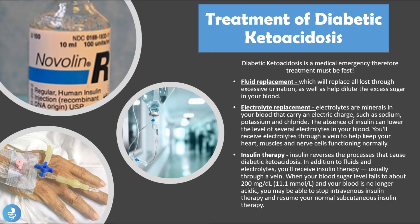Finally, insulin therapy reverses the processes that cause diabetic ketoacidosis. In addition to fluids and electrolytes, insulin is administered through a vein. When blood sugar levels fall to about 200 mg/dL (approximately 11.1 mmol/L) and the blood is no longer acidic, the patient may stop intravenous insulin therapy and resume normal subcutaneous insulin therapy. The three key treatment points are: fluid replacement, electrolyte replacement, and IV insulin therapy until blood sugar levels normalize.